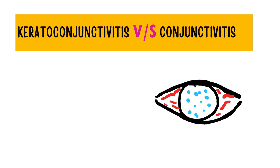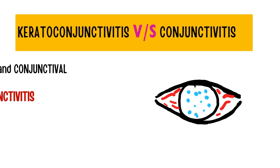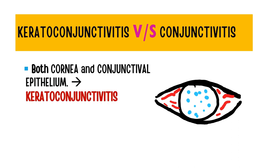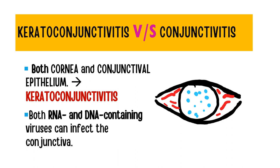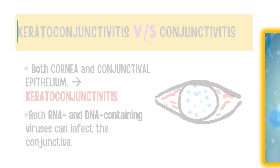First, we discuss keratoconjunctivitis. As we all know, conjunctivitis is basically the inflammation of the conjunctiva, whereas when both the cornea and the conjunctival epithelium are involved with inflammation, it is called keratoconjunctivitis. The keratoconjunctivitis of viral etiology can actually be caused by both RNA and DNA containing viruses.